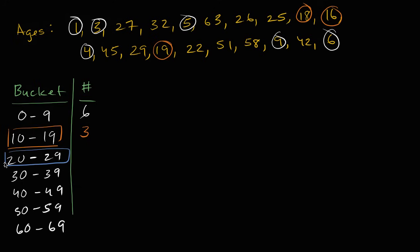What about 20 to 29? So it's one, two, three, four, five people. Five people fall into that bucket. All right. What about 30 to 39? We have one, and that's it. Only one person in that 30 to 39 bin or bucket or category.